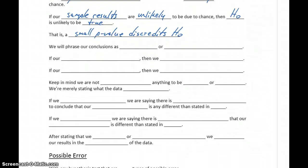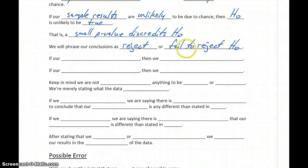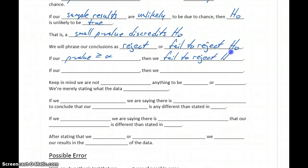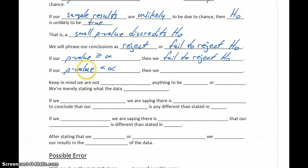When we write our concluding statements, we'll phrase our conclusions as either rejecting or failing to reject the null hypothesis. We'll generate a p-value, compare it to our significance level alpha, and make a decision. If our p-value is greater than or equal to alpha, we fail to reject the null hypothesis — it's likely our sample results were due to chance and there's not enough information to discredit it. But if our p-value is less than alpha, there is enough evidence to suggest the null hypothesis is discredited, so we reject the null hypothesis.